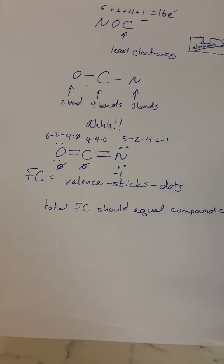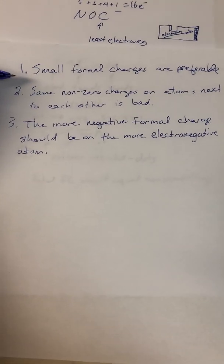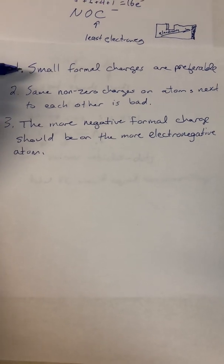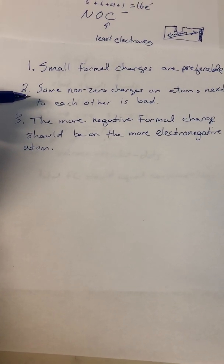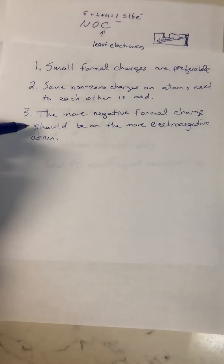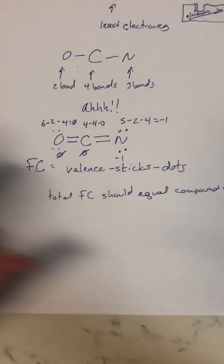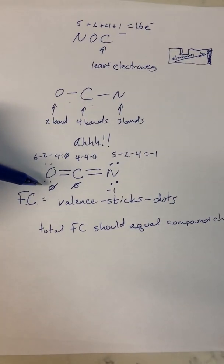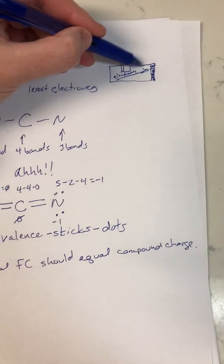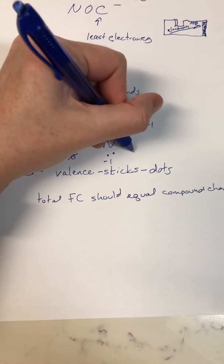Let's go back and look at the formal charge rules. Small formal charges are preferable. If we have a negative one charge, we should be able to get two atoms with zeros and one with the negative one. Also, having the same non-zero formal charge on atoms next to each other is bad. And the more negative formal charge should be on the more electronegative atom. Oxygen is farther to the right than nitrogen on the periodic table, so nitrogen in this position is less electronegative.